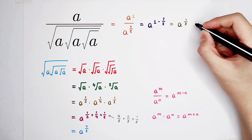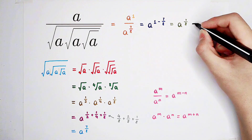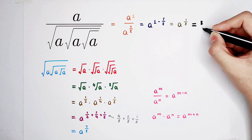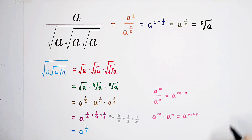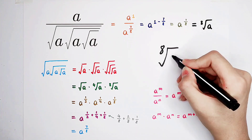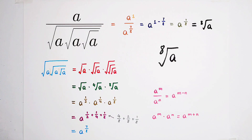Of course, it can also be written as the 8th root of a. So that's our answer — the 8th root of a. Do you get it? Give me a thumbs up, subscribe, and check out these two videos. We'll see you next time.